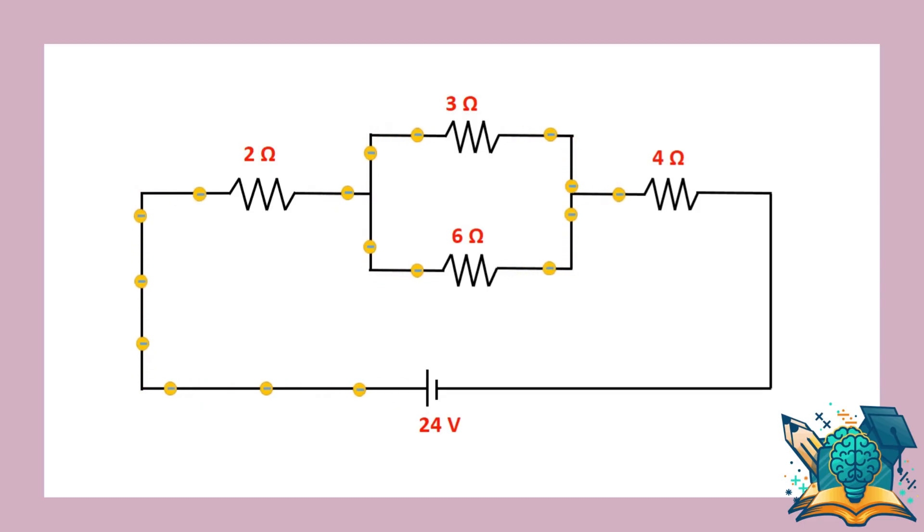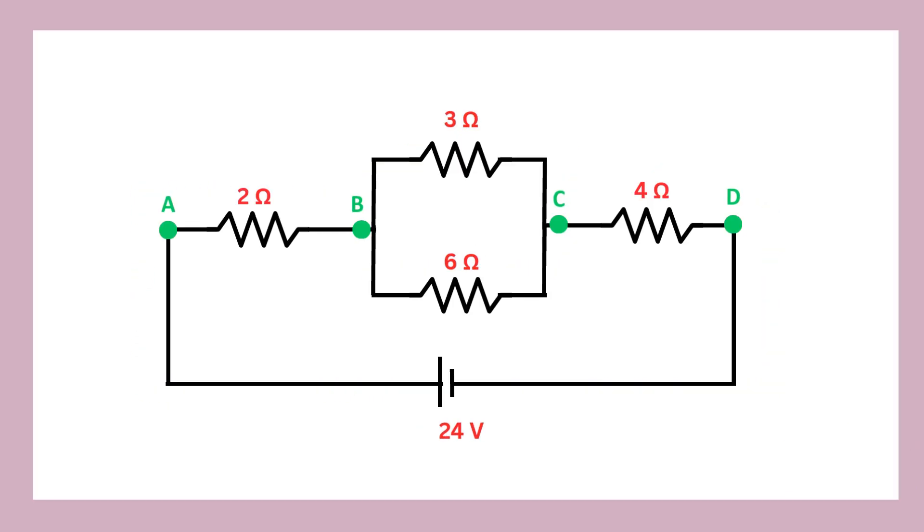So now, let's take a look at how the current flows through the circuit. To make things easier, let's label the points as A, B, C, and D.